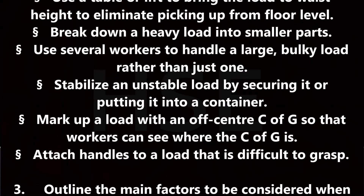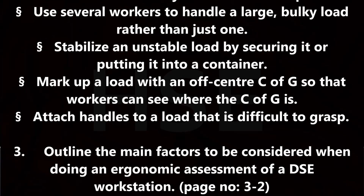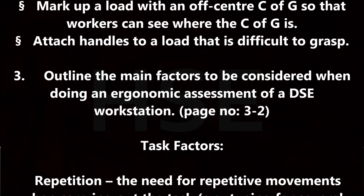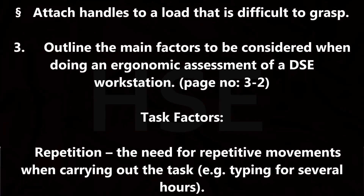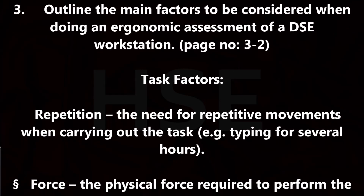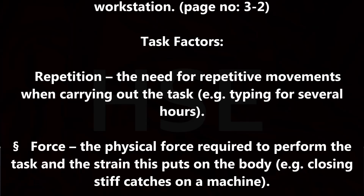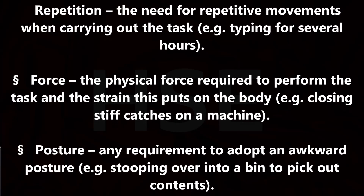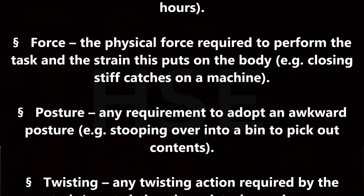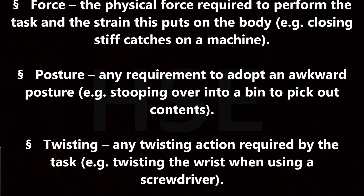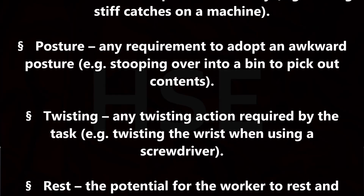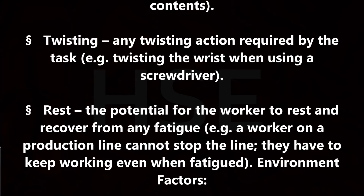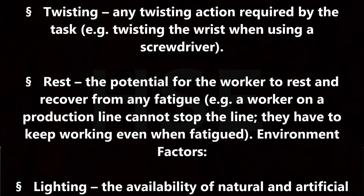Outline the main factors to be considered when doing an ergonomic assessment of a DSE workstation. Task factors — Repetition: the need for repetitive movements when carrying out the task, for example typing for several hours. Force: the physical force required to perform the task and the strain this puts on the body, for example closing stiff catches on a machine. Posture: any requirement to adopt an awkward posture, for example stooping over into a bin to pick out contents. Twisting: any twisting action required by the task, for example twisting the wrist when using a screwdriver. Rest: the potential for the worker to rest and recover from any fatigue — for example, a worker on a production line cannot stop the line and has to keep working even when fatigued.